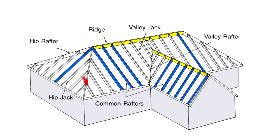The common rafter that hits on the end of the ridge is called the king common, but it's exactly the same rafter — same cuts, same length. We also have hip rafters, valley rafters, and jack rafters. Hip jacks run from the wall to the hip; valley jacks run from the ridge to a valley. On a regular hip roof, the hips and valleys always run on a 45-degree angle in plan view.